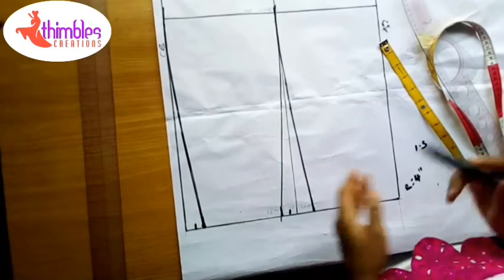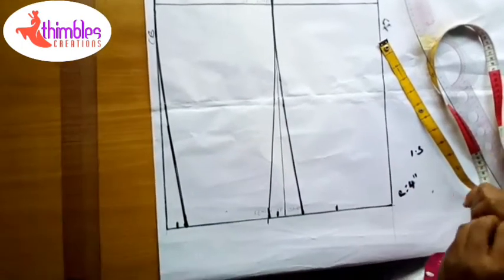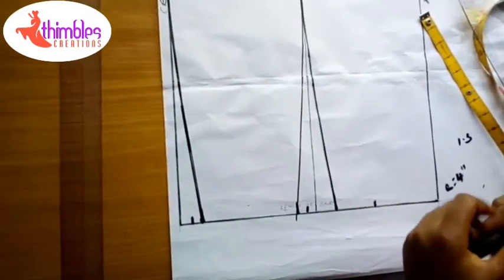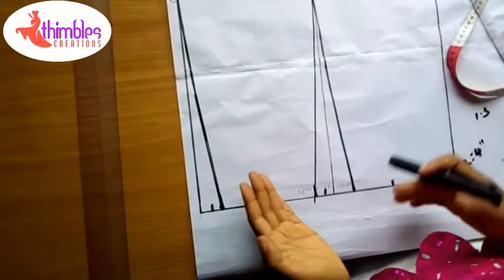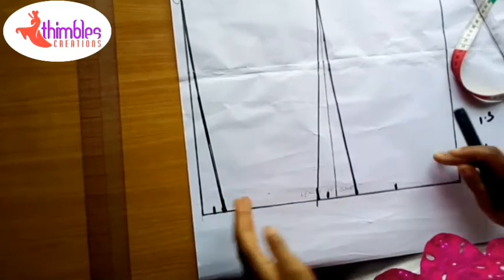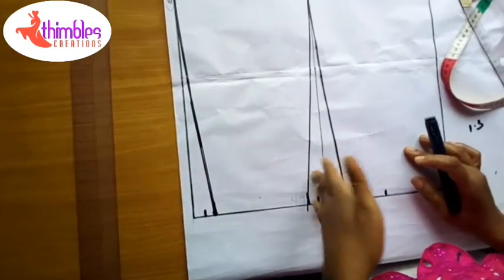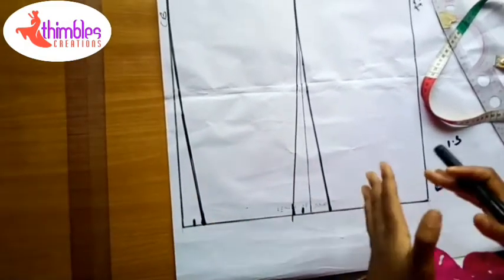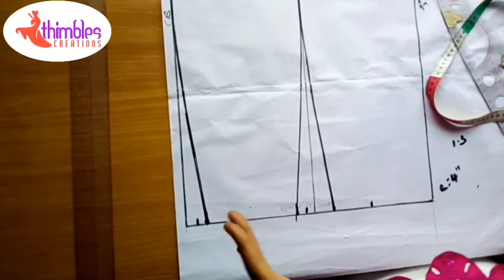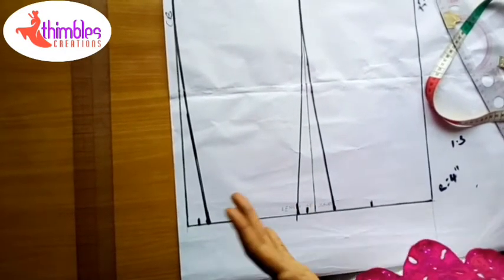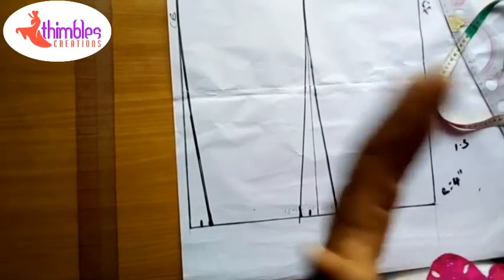Another method we can use—before I cut it out—another method you can use is deducting about 1 inch or 1 to 1.5 inches from the center back and side seams, depending on how you want the skirt to pencil. There are people that don't want the skirt to pencil so much. There are people that like it penciled, so it's your description that you're going to use.